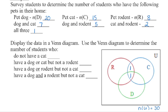Dog and rodent is 5, so that's this section here. There's already 1 student in here — we cannot count each student more than once, so there are 4 students in this section who have a dog and rodent only. And we have 7 students with a dog and cat. Dog and cat is this section here — we already have 1 student in there, which means there are 6 students who have a dog and cat only.